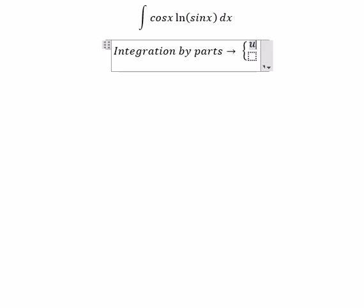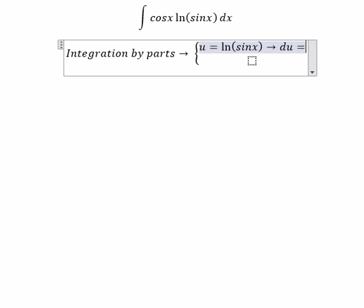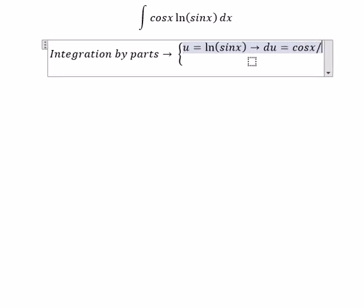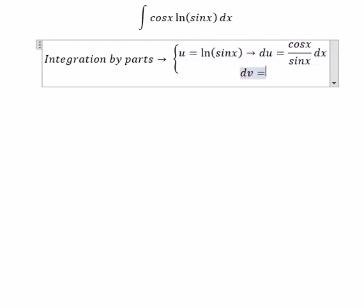u equals ln of sine x, so du equals cosine x over sine x dx. For this one, dv equals cosine x dx, so v equals sine x.